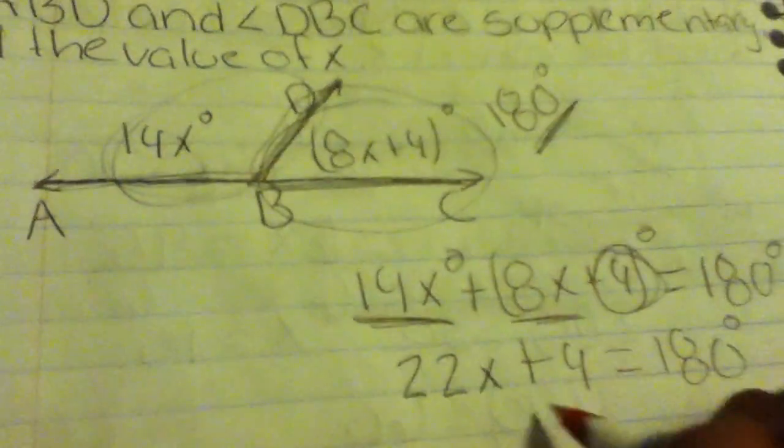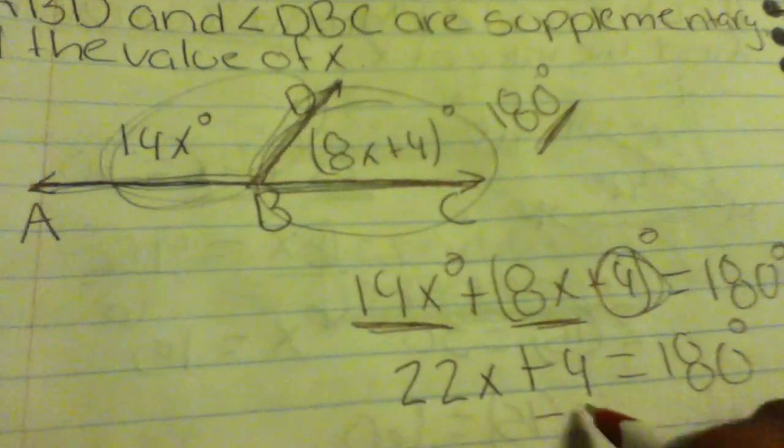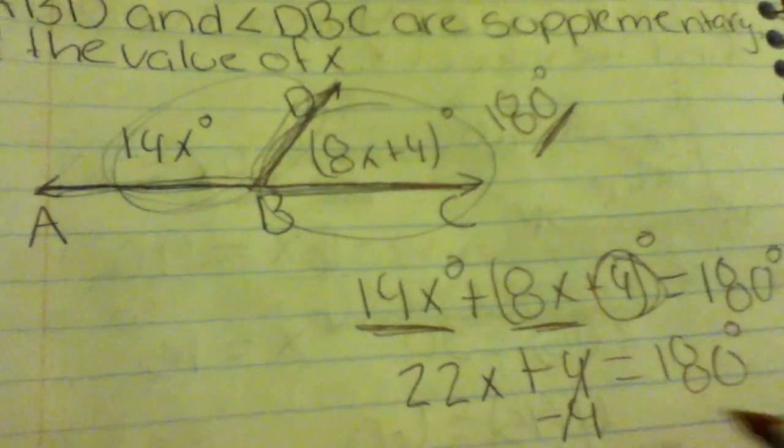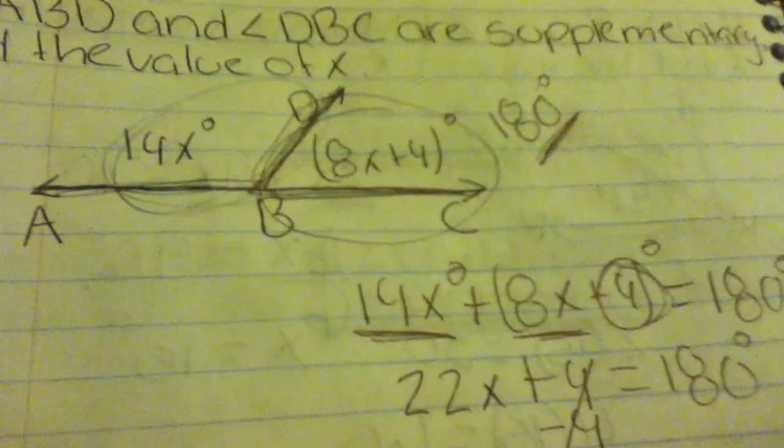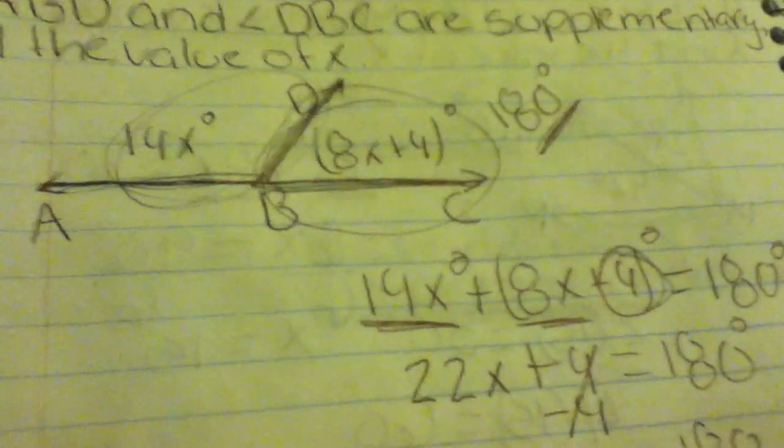You want to get rid of this 4 on this side and bring it to that side, so you do the opposite of adding - you subtract 4. That cancels it out and you only have 22x.